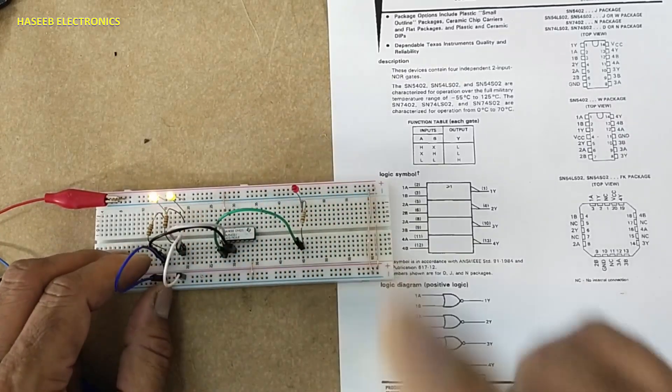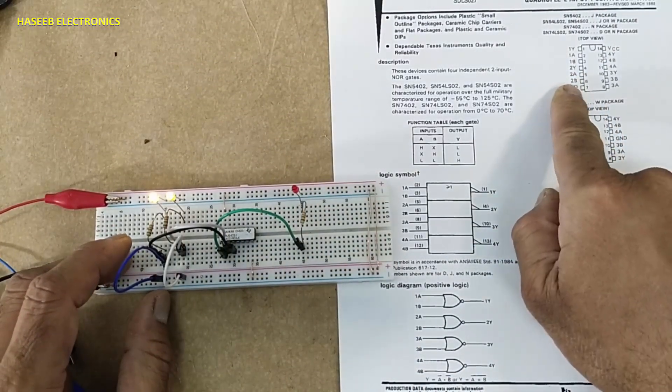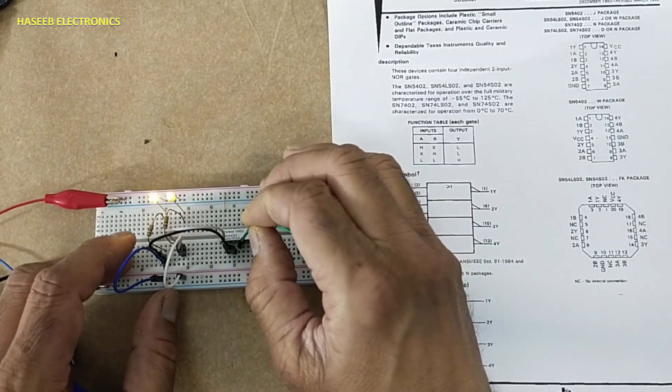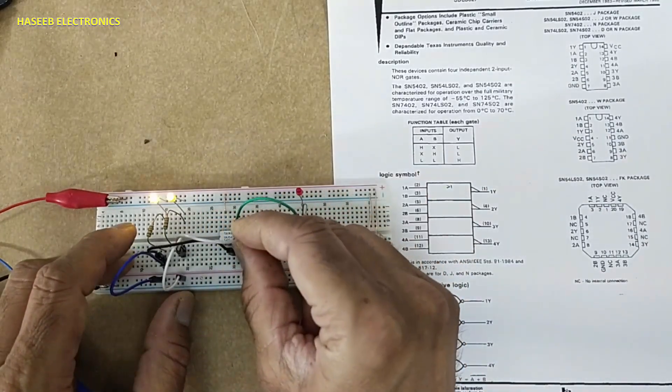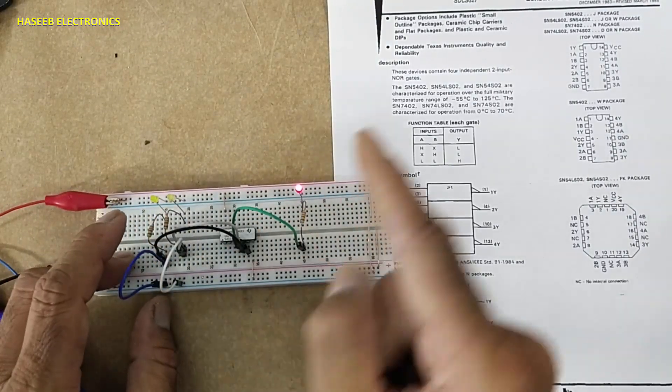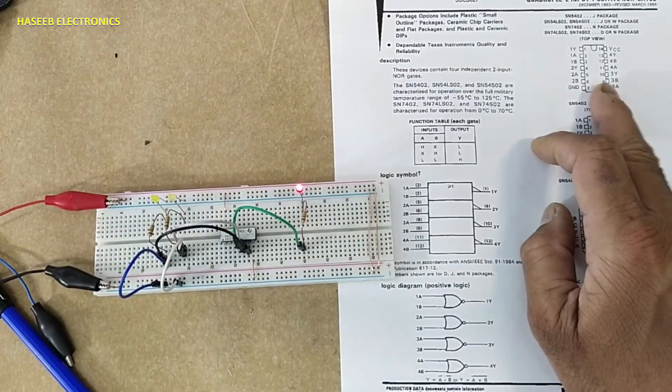All high, output low. We can test the other gates. Next is pin number four output. All gates are independent from the other. All inputs low, output high. We can also monitor pin number—third gate, pin number ten output.